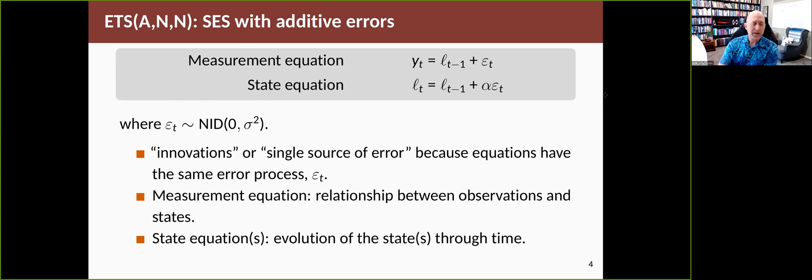So this is called an innovations or a single source of error state space model because both equations have exactly the same process input. The epsilon here is the same in both equations, which makes it an unusual form of state space model. The first equation we call the measurement equation because it shows how the states, in this case there's one state lt, shows how the states are related to what you actually observe, which is yt. And then the state equation shows how the states evolve through time. In this case, there's only one state, so how the one state l evolves through time.